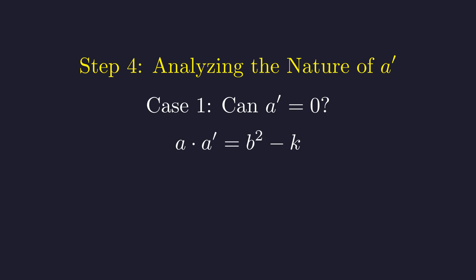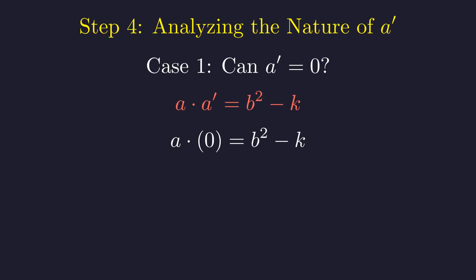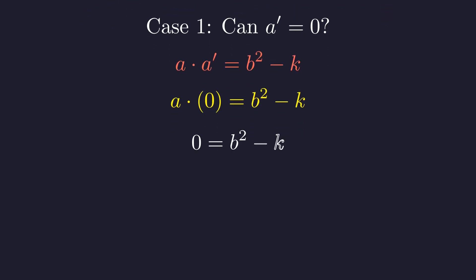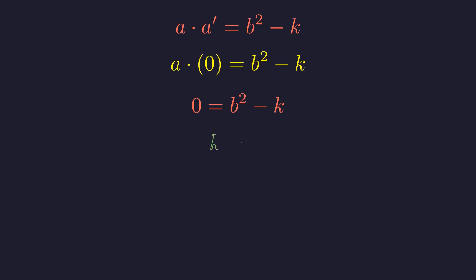We start with the product of roots formula. Now let's substitute zero in for a prime. This gives us a times zero on the left. Simplifying the left side leaves us with zero equals b squared minus k. Adding k to both sides isolates k. This shows k would be b squared, which is a perfect square, but this contradicts our assumption, so a prime cannot be zero.